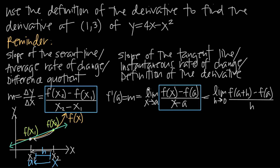That's how these two things are different. In this problem we've been asked to use the definition of the derivative to find the derivative at a particular point. We can use either formula: the limit as x goes to a, or the limit as h goes to zero. Let's do both so you can see that both formulas always give the same result. Using the limit as x goes to a, since the point of interest is (1, 3), a equals 1.